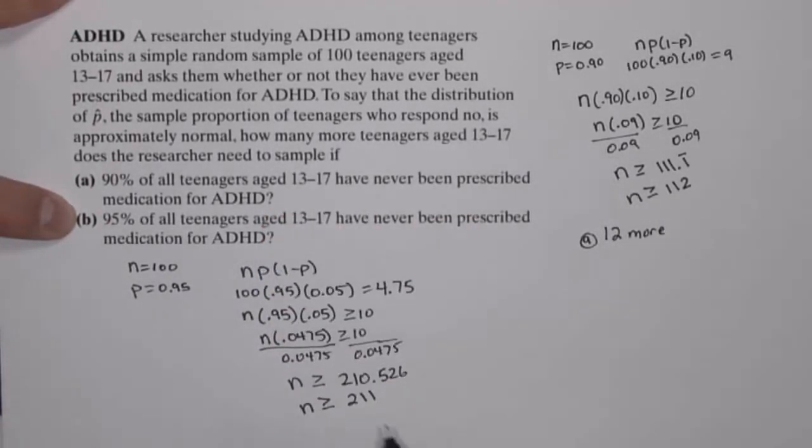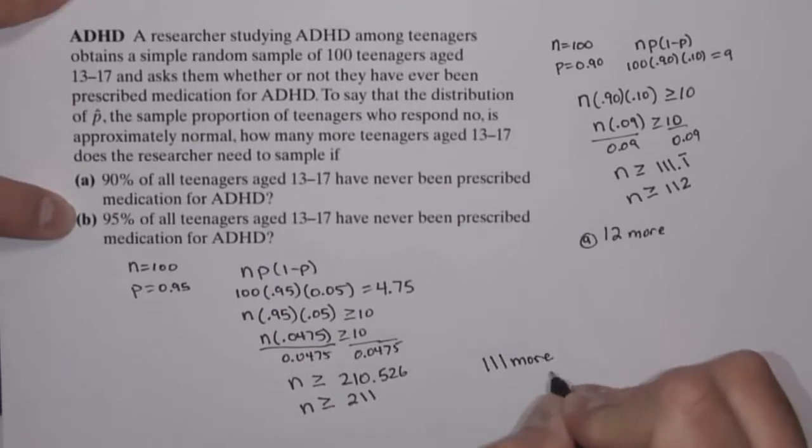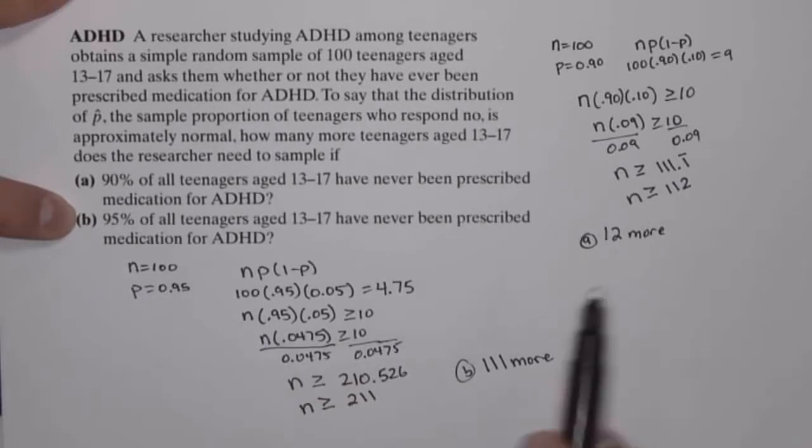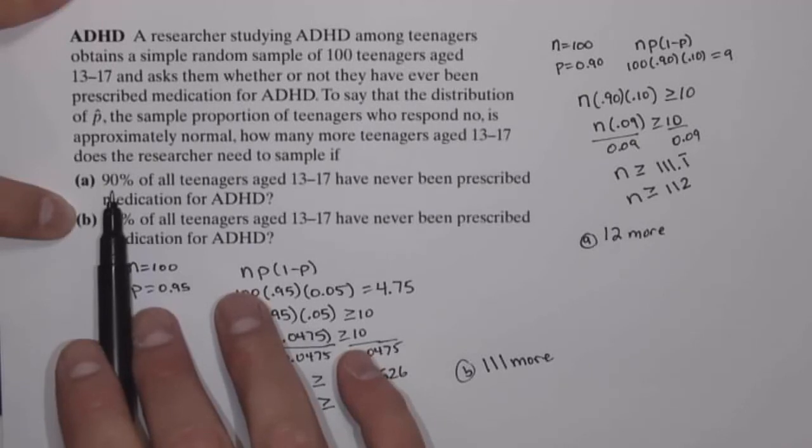So if we started with a sample size of 100, we would need 111 more teenagers included in our sample if the true proportion is 95%. So, 12 more if the proportion who have never received medication for ADHD is 90%, and 111 more if it's 95%.